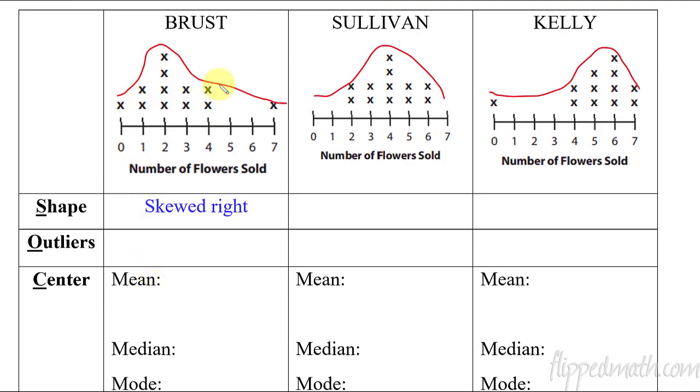Now what about outliers? Does he have any outliers? Yeah, this seven here, that seems to kind of be off on its own. So let's say that he does have an outlier and that would just be the number seven.